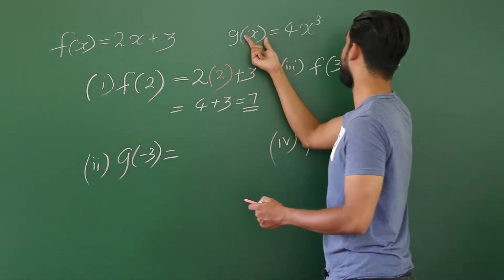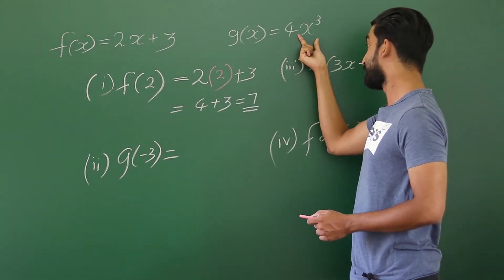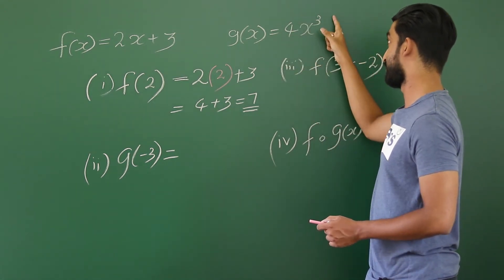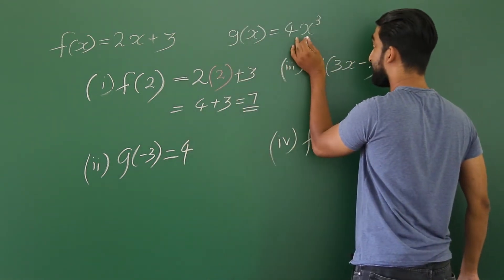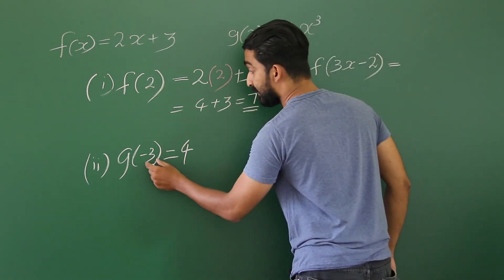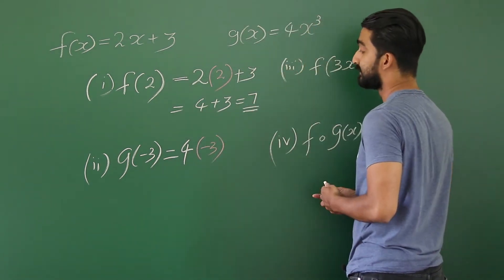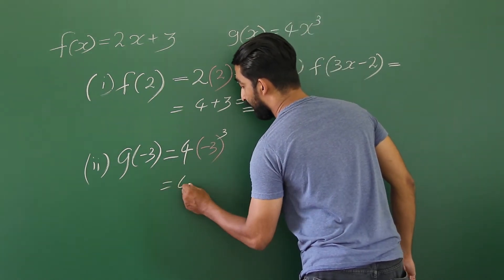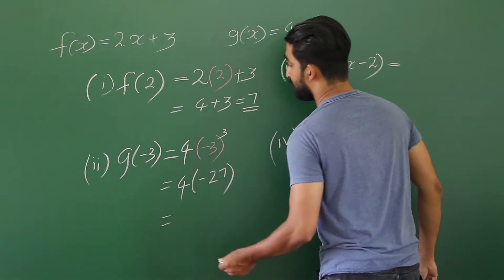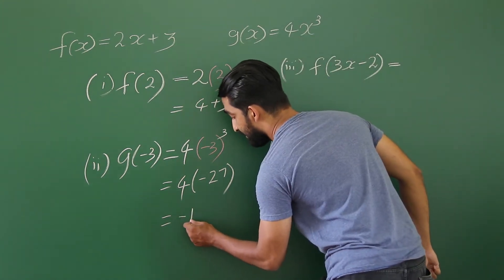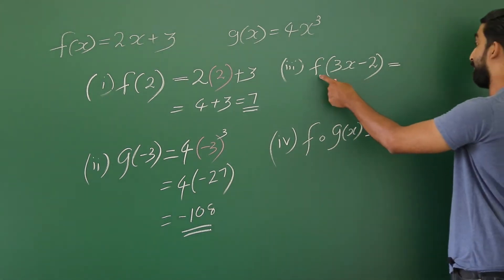Roman number 2: g(-3). That means this function 4x cubed — we have to substitute minus 3 for x in the g(x) function. In g(x), x should be replaced by minus 3. So we write 4 times (minus 3) to the power 3. Minus 3 to the power 3 is minus 27, so you will get 4 times minus 27, which is minus 108.